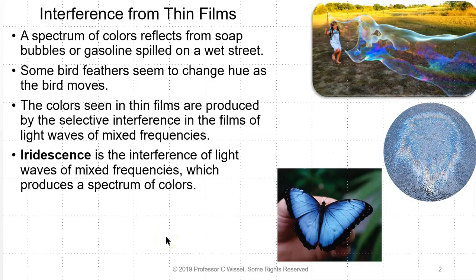You've seen this phenomenon — probably didn't even know what it was. It's beautiful, actually. If you have a soap bubble, or gasoline spilled on a wet street, or from the wings of various insects, you can often see a spectrum of color reflected from these things. Some bird feathers actually seem to change hue as the bird moves, and insects do the same thing. The colors seen in thin films are produced by the selective interference in the films of light waves of mixed frequencies. Iridescence is the interference of light waves of mixed frequencies, which produces a spectrum of color.